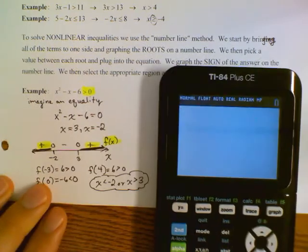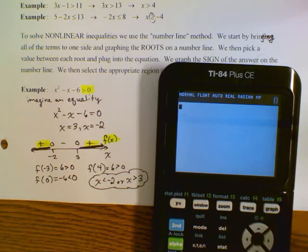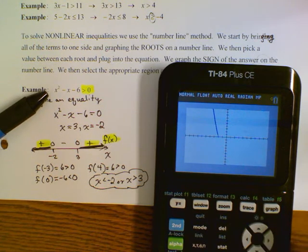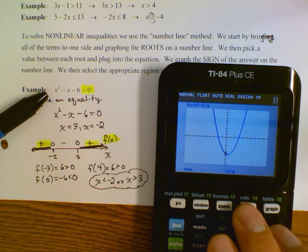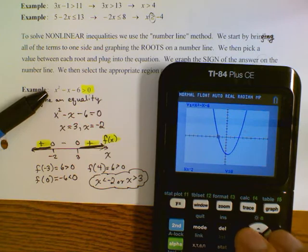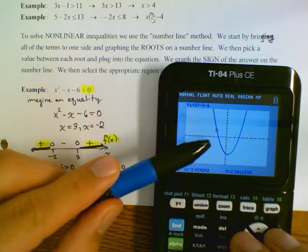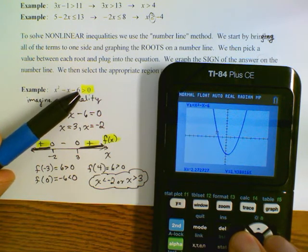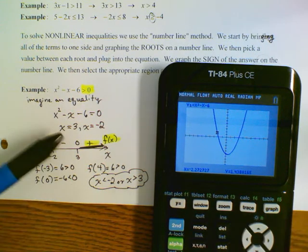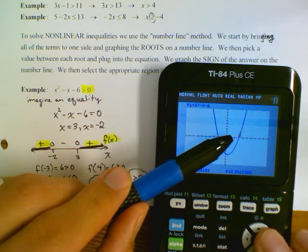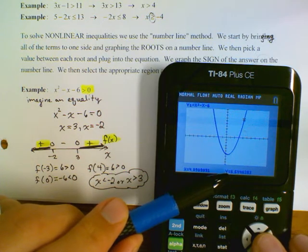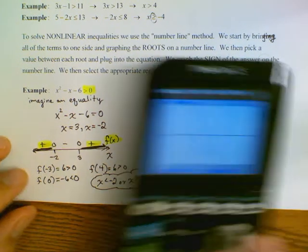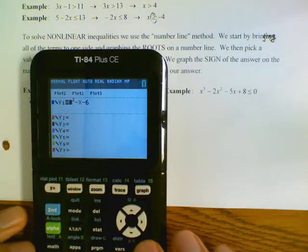If you have a calculator and are allowed to use it, you can just hit trace. At negative 2 you can see all the values on the left side are above the x-axis, meaning x less than negative 2 gives a function value greater than zero. Then tracing to positive 3, all the y-values to the right are positive, so y is positive when x is greater than 3.